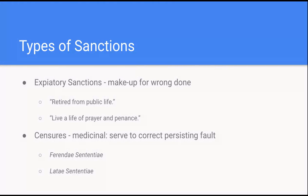You might see this in priests that are accused of sexual abuse and are then justly convicted. The church might say that they need to retire from public life or they need to live a life of prayer and penance for what they've done — it's just making up for the wrong they've done. Another type of sanction, which really does not have a comparison in our legal system, are what are known as censures.